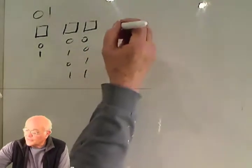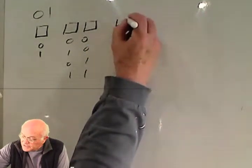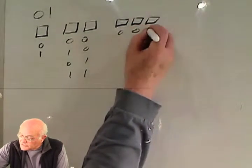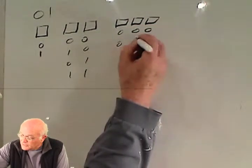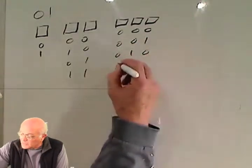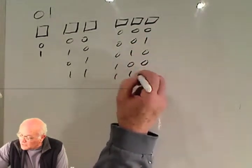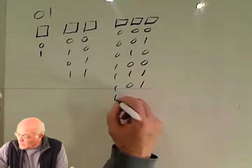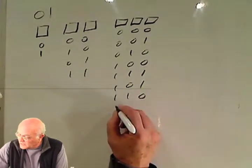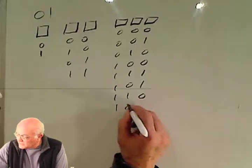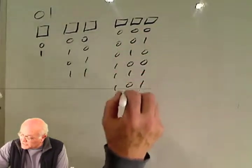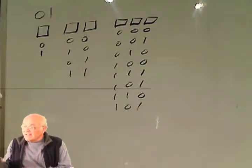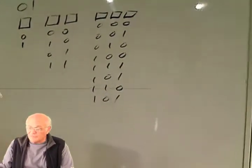If you have 3 digits, the possibilities are: 000, 010, 100, 010, 011, 101, 110, 111 — that's 1, 2, 3, 4, 5, 6, 7, 8. Okay, let's look at the genetic code. The genetic code is much more powerful.